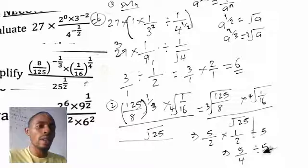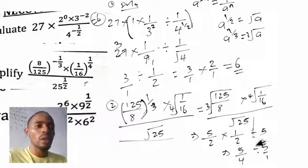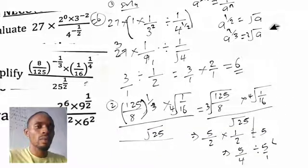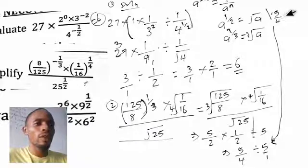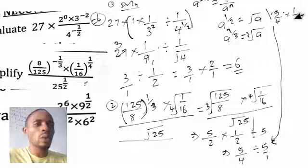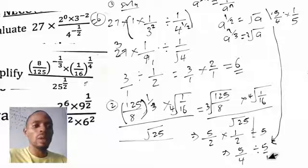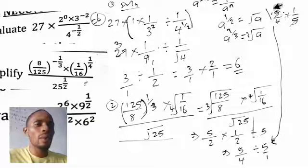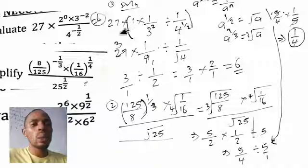We change the division to multiplication. We have 5 over 4 multiplied by 1 over 5 — because dividing by 5 over 1 means multiplying by 1 over 5. The 5 in the numerator and the 5 in the denominator cancel out, leaving 1 times 1 over 4 times 1. So the answer to question two is equal to 1 over 4. And the answer to question one is equal to 6.